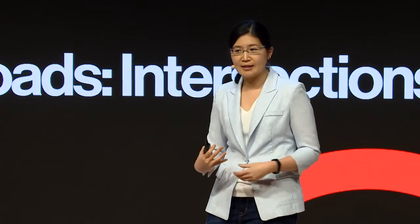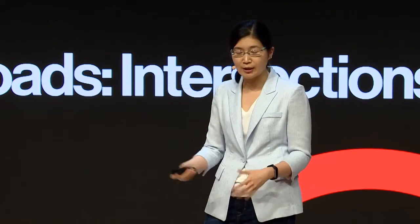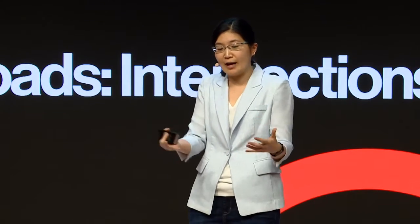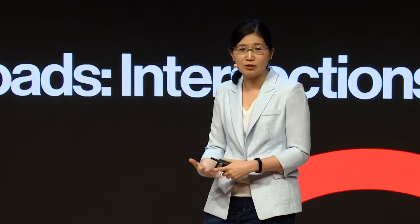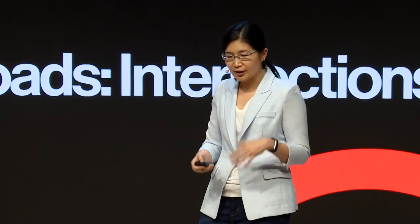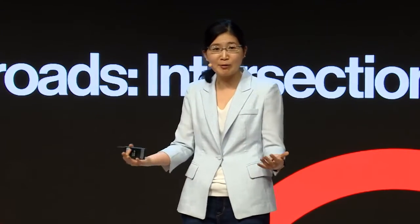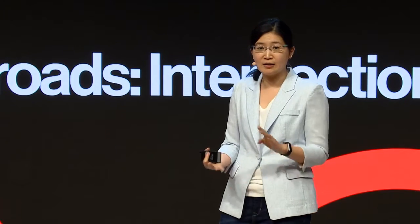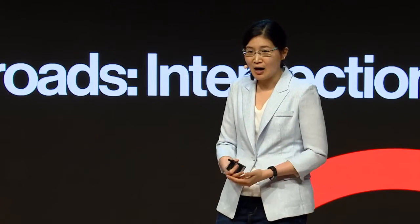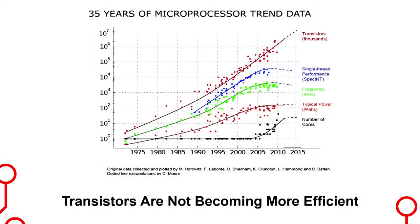If we look at the existing embedded processors out there, they currently consume an order of magnitude more power than what is allowed on handheld devices. Typically on these devices, you can only afford about a watt of computational power. If we think about how we've dealt with this over the past few decades, we would just wait for Moore's Law and Dennard Scaling to give us faster, smaller, and more efficient transistors. But this trend has really slowed down over the past decade, so we need to think of something else.